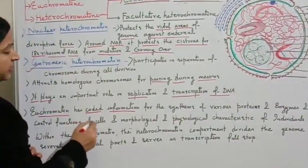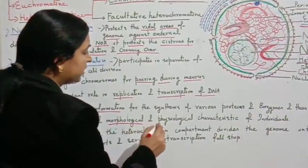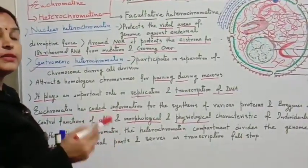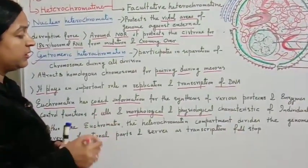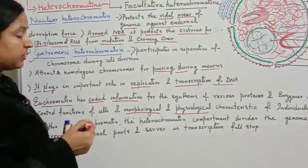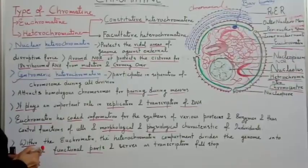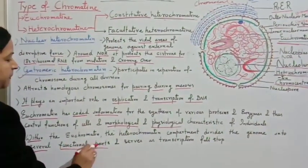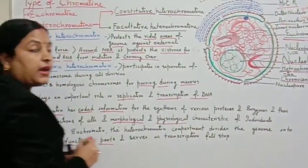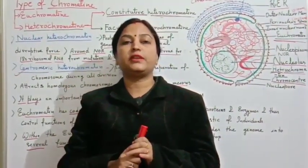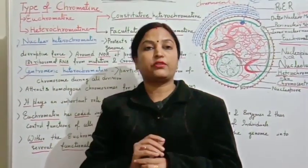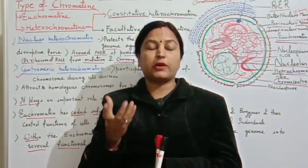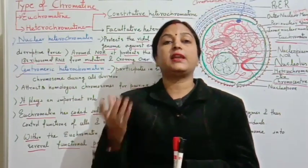Euchromatin controls the morphological and physiological characteristics of an individual. The heterochromatin compartment divides the genome into several functional parts and serves as a transcription barrier, preventing transcription from spreading into inactive regions.